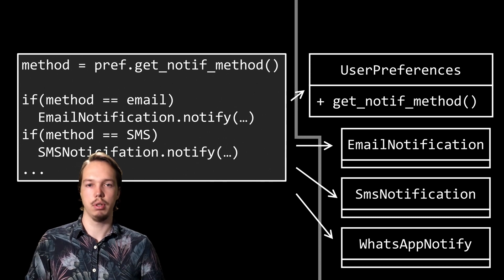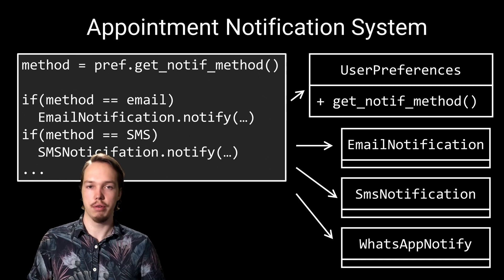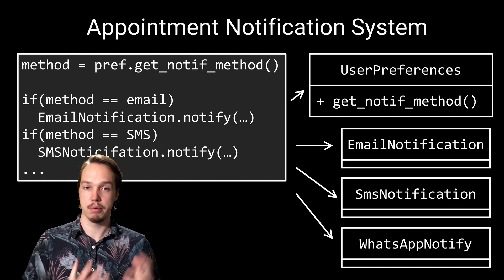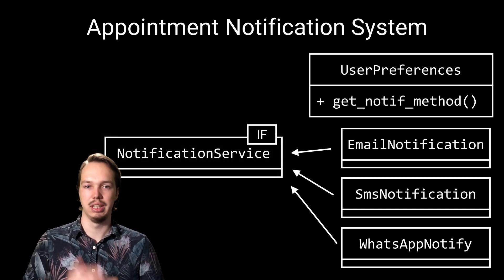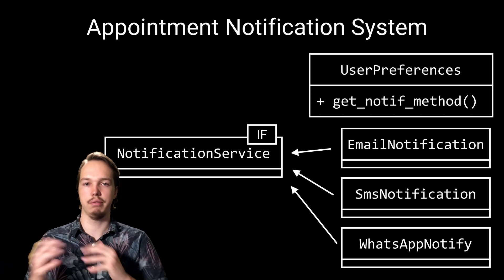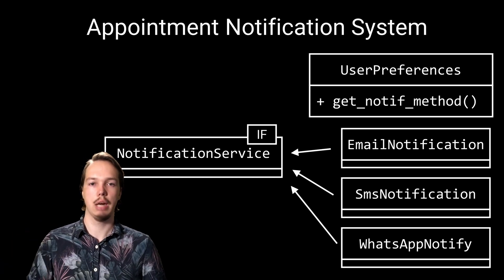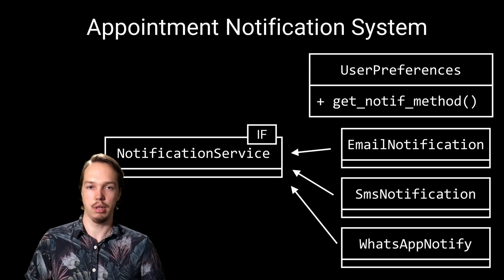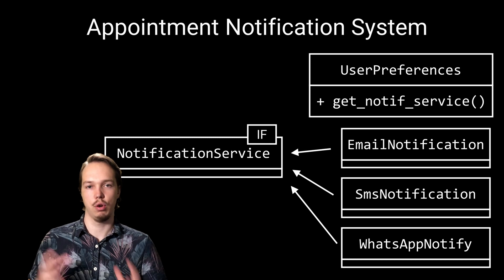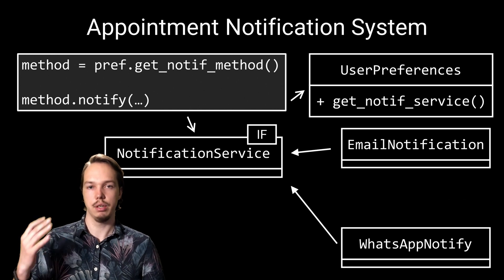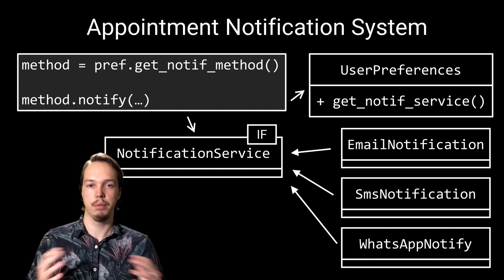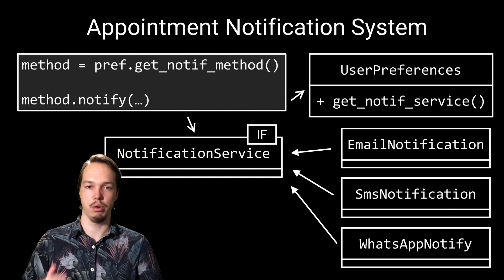Let me explain this principle by fixing our appointment notification system. First, we'll address the problem that adding a new notification service impacts our business logic by adding some abstractions. We'll add an interface to represent an arbitrary notification service. The different concrete notification services will then implement this interface. If these notification services are third-party libraries, you might need to introduce some adapter classes for this. If we now update our user-preference component to return an instance of a notification service, our code suddenly becomes a lot simpler. More importantly, we can now add additional notification services without having to update the logic that sends out the notifications based on user preference.